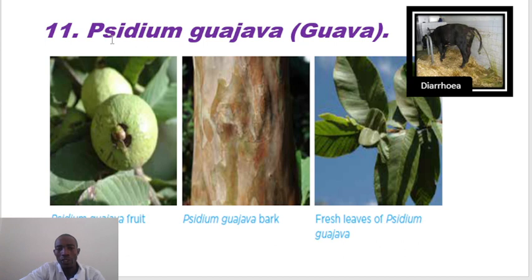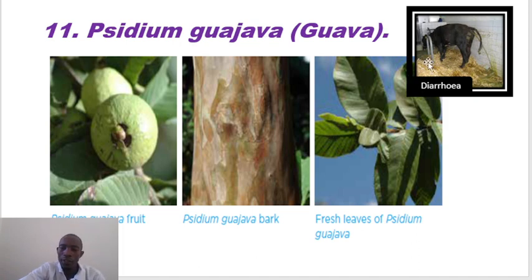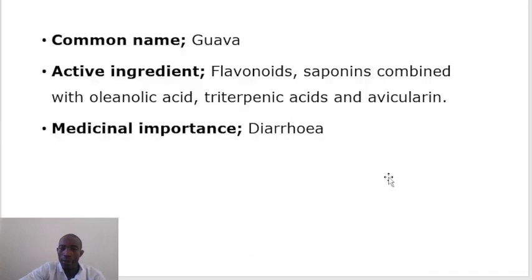The other plant that's used is guava, and its botanical name is Psidium guajava. It's used in treatment of diarrhea, whereby they use the leaves to make a drench and give it to the animals. Guava contains various ingredients: flavonoids, saponins, oleic acid, and many more. It's mainly used in diarrhea infections.